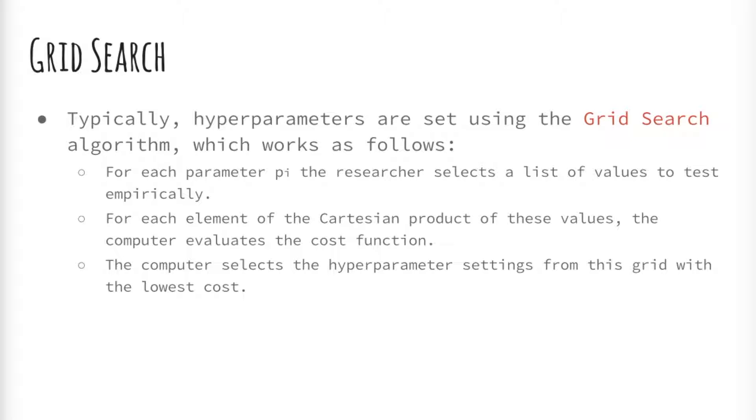Grid search is dead simple to set up and easy to parallelize. It is the most expensive method in terms of total computation time. However, if run in parallel, it is fast in terms of wall clock time.